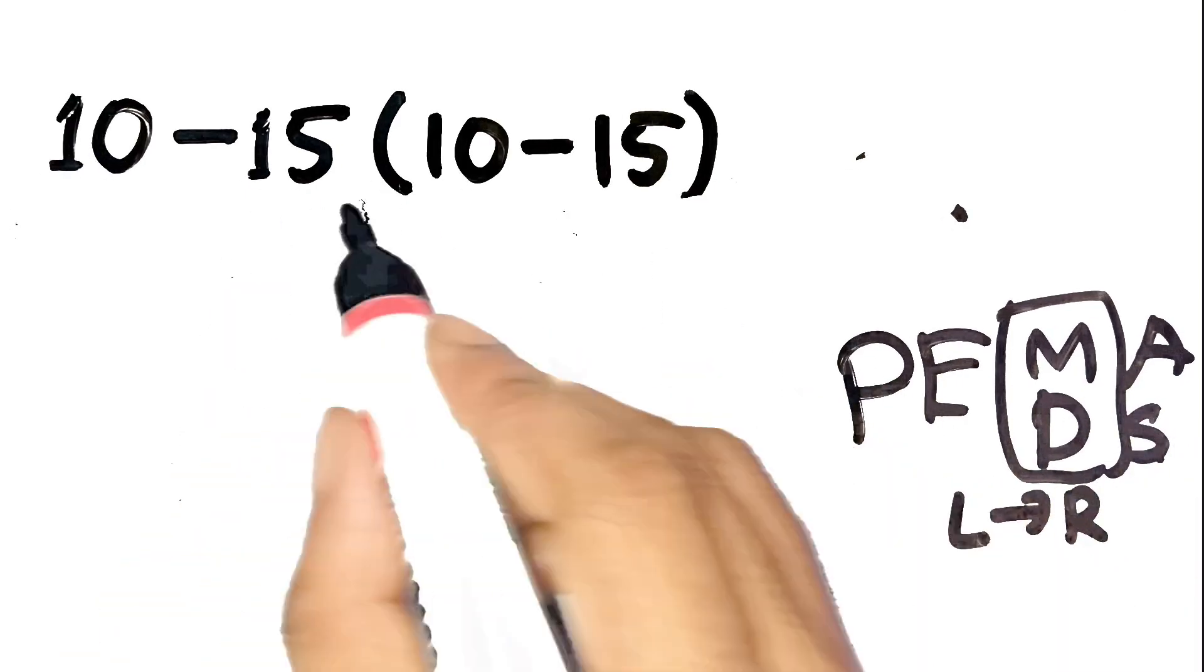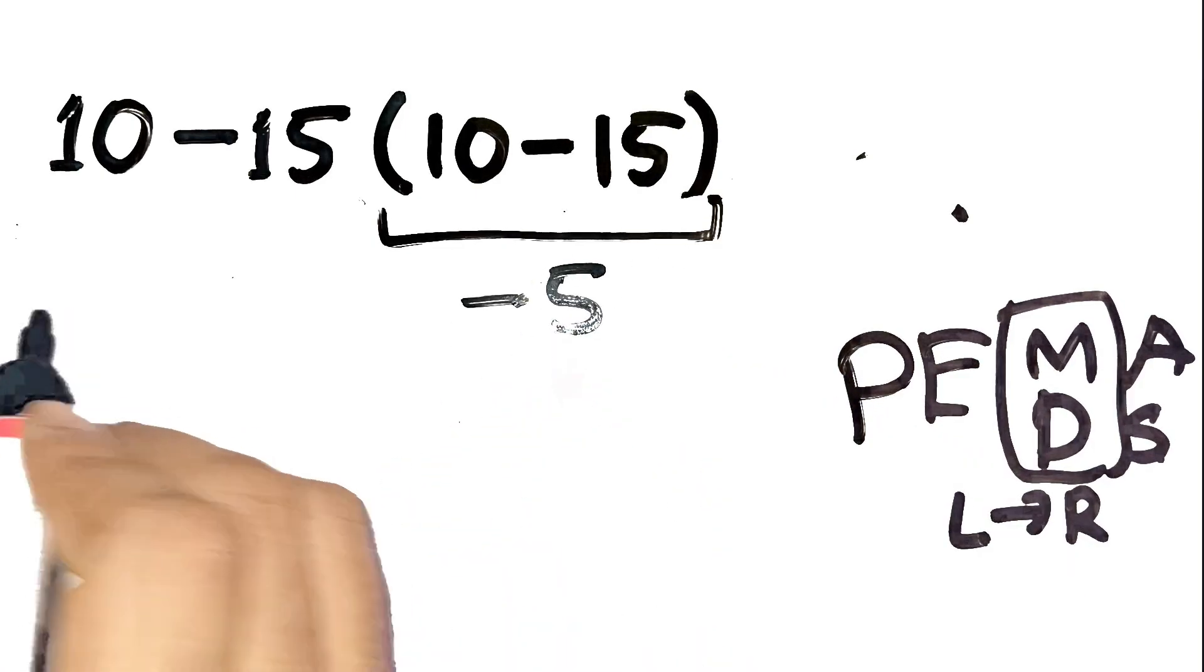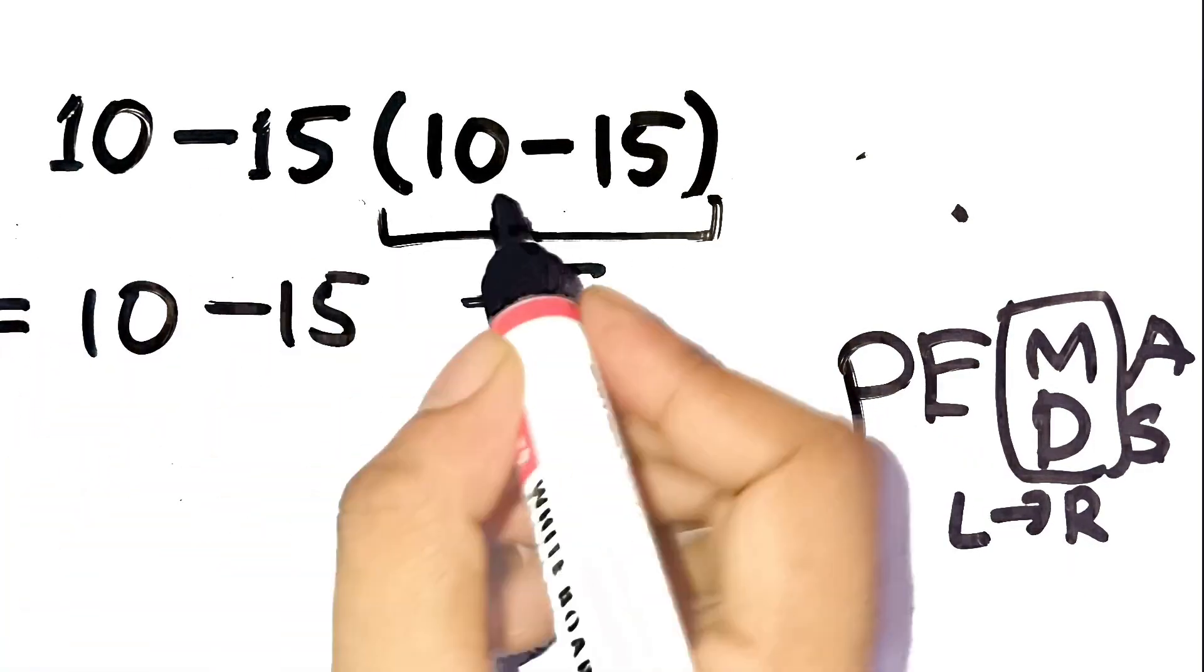So first, handle the parentheses. 10 minus 15 equals negative 5. Now the expression looks like 10 minus 15 times negative 5.